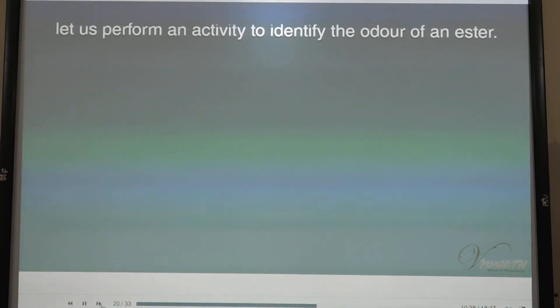Let us perform an activity to identify the odor of an ester. Take 1 ml of ethanoic acid and 1 ml of glacial acetic acid in a test tube. Add a few drops of concentrated sulfuric acid. Pour the reaction mixture for at least 5 minutes in warm water. Pour the mixture into a beaker containing 20 to 50 ml of water and smell the resulting mixture. It smells like nail polish remover.